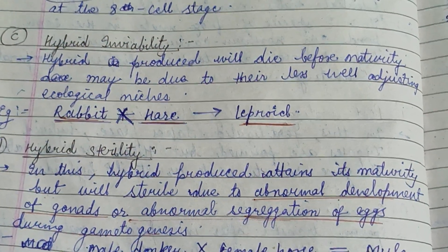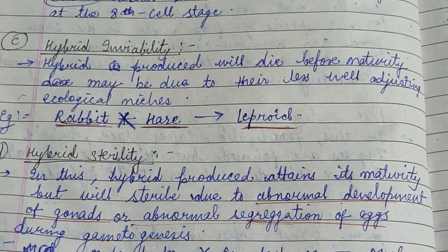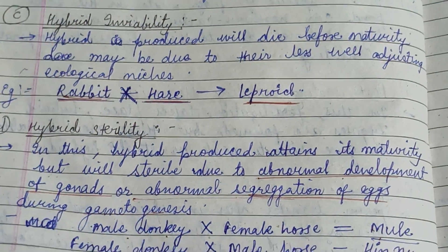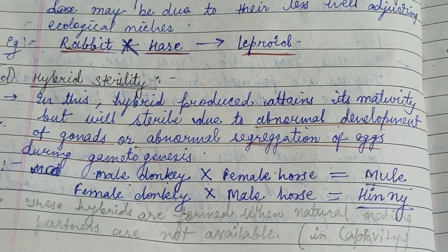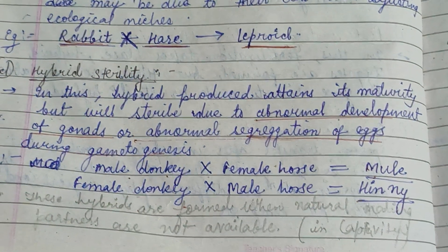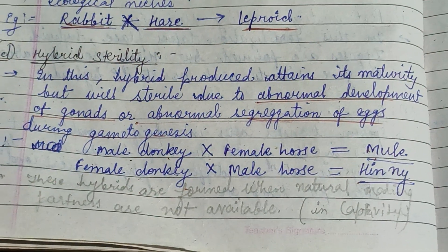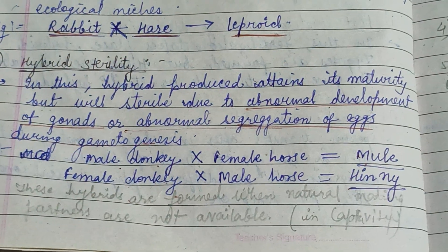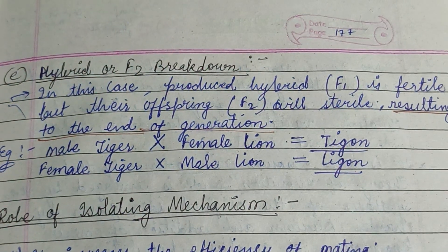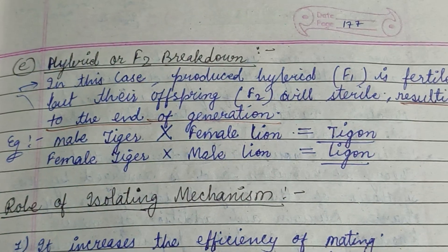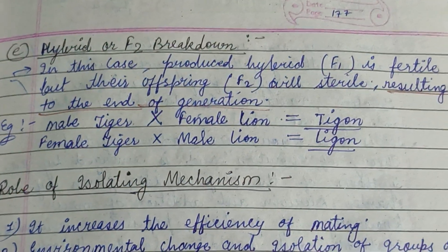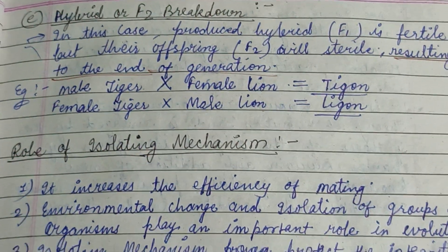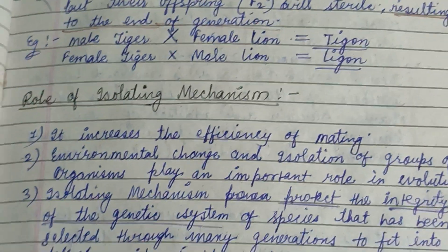Hybrid inviability is when zygotes are formed and hybrids produced, but they are sterile and cannot produce young ones. These hybrids form when natural mating partners are not available in captivity. The last type is hybrid or F2 breakdown, in which hybrids produce offspring that are often weak or sterile, resulting in the end of the generation — for example, male tiger crossed with female lion producing tigon and liger.